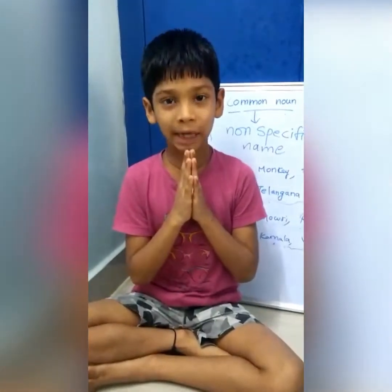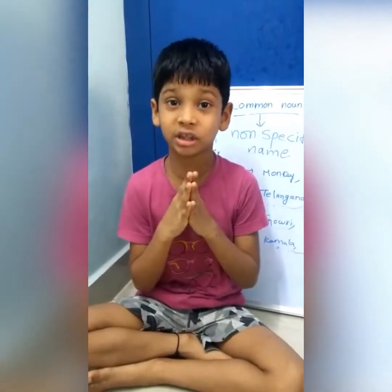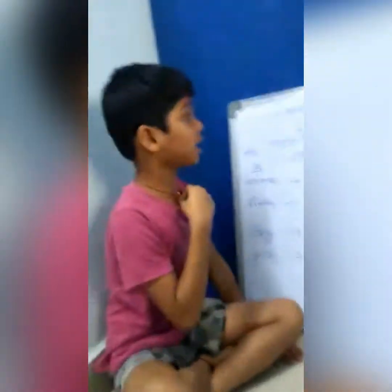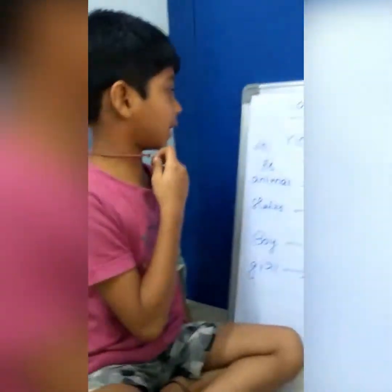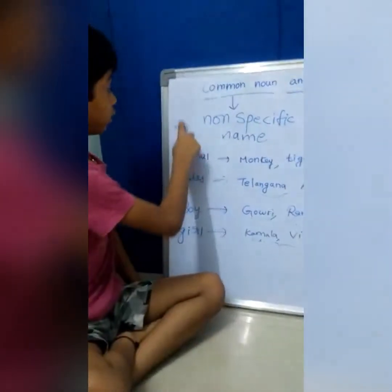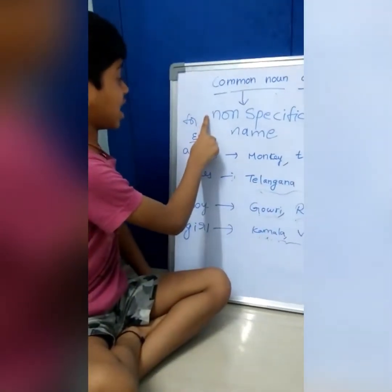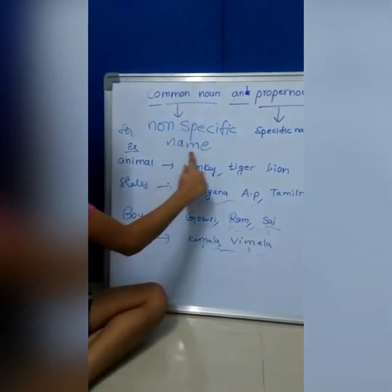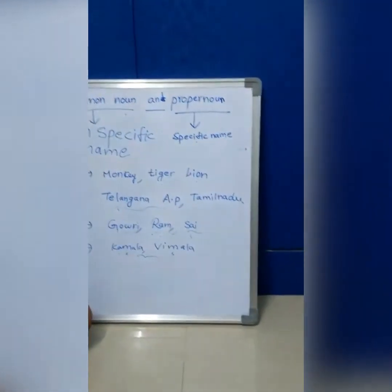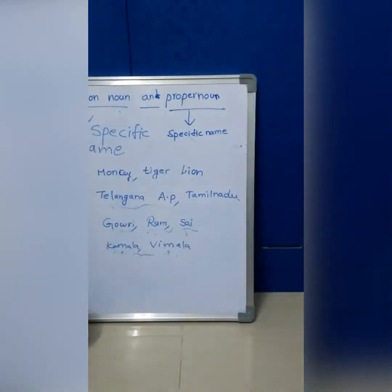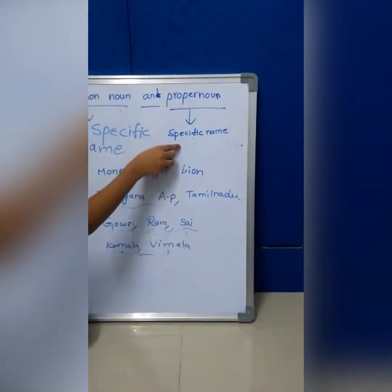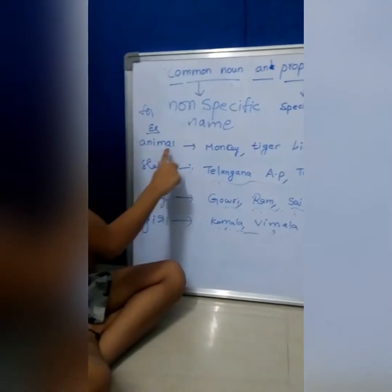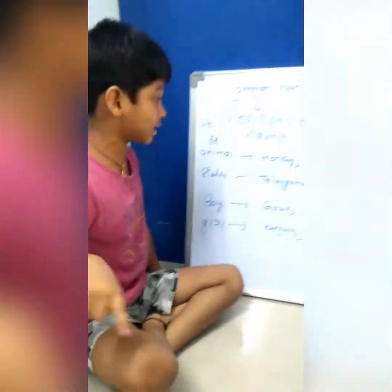I am studying second class in Rajidani Public School. I am telling about common noun and proper noun. Common noun is a non-specific name. Proper noun is called a specific name. For example, we know animals.